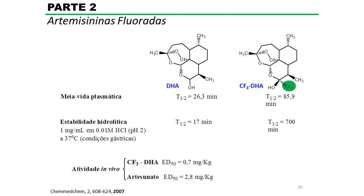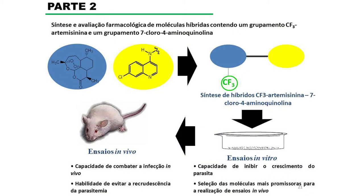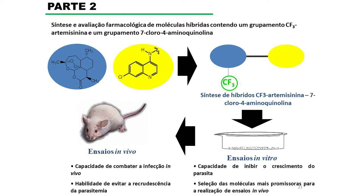Para exemplificar, comparando a di-hidroartemisinina com o respectivo análogo fluorado, o tempo de meia-vida plasmática do análogo fluorado é bem maior, e a estabilidade hidrolítica em condições encontradas no estômago humano também é bem mais estável. Além disso, esses derivados são mais ativos in vivo do que os derivados utilizados atualmente. E a ideia foi combinar um derivado fluorado da artemisinina com uma 7-cloro-4-aminoquinolina — grupo presente em uma série de fármacos usados no tratamento da malária e responsável pela atividade desses fármacos — obtendo assim uma molécula que poderia atuar de duas formas diferentes no combate ao parasita.